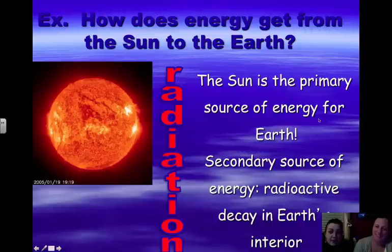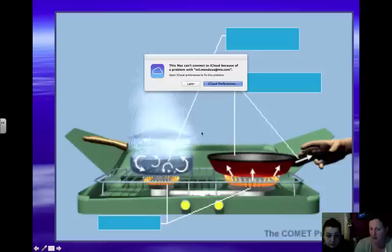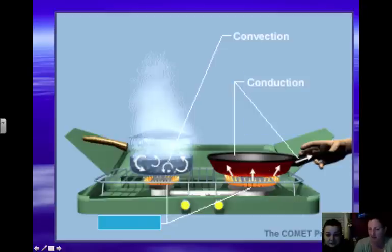The sun is the primary source of energy for the earth. The secondary source of energy is radioactive decay within the earth's interior. We have this little picture here that's showing all three types of heat transfer. In this first pot we can see water that is boiling. What kind of heat transfer would that be? That would be convection. Here we have our metal pan and our hand is on the handle. This is conduction through the solid. And finally that flame of gas would of course be radiation.